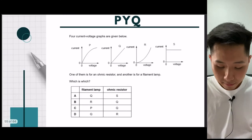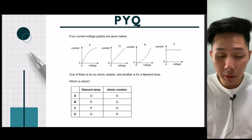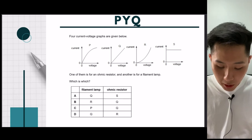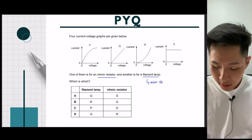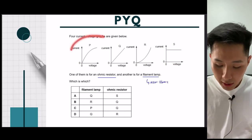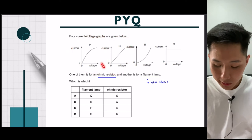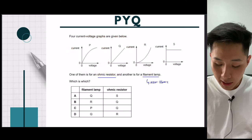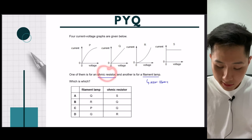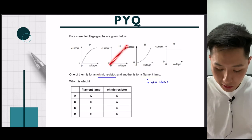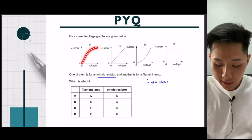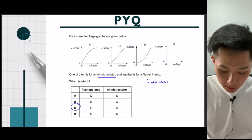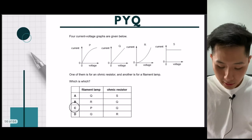Practice questions: one graph belongs to an ohmic resistor, the other to a filament lamp — a non-ohmic resistor. For an ohmic resistor, the graph must be a straight line, so the answer is Q. For a non-ohmic resistor, it starts as a straight line and then curves over, so the answer is C.